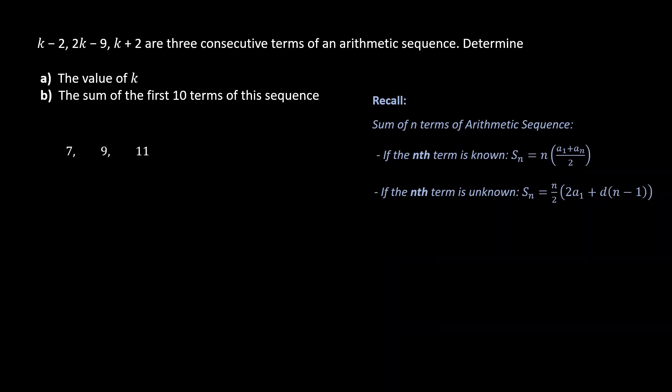In part b, for this problem, it'd be easier to use the second formula as the 10th term is unknown. Now given 7 is our first term of the sequence, we see that the second term 9 can be obtained by adding 2 to the first term 7, and the third term can be obtained by adding 2 to 9. So we conclude that the common difference d is 2.